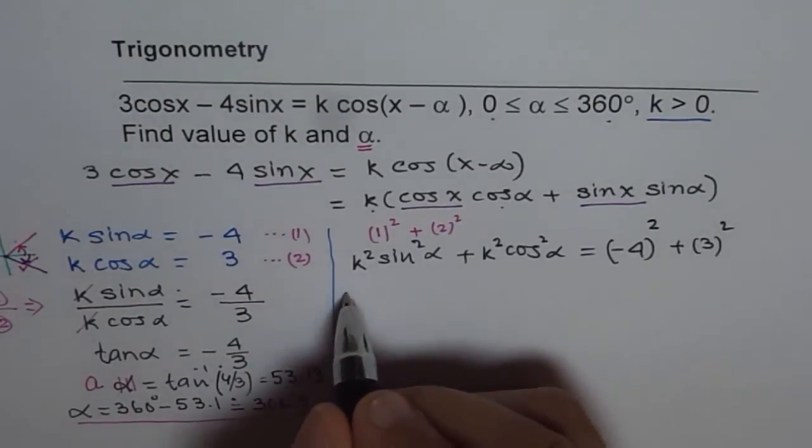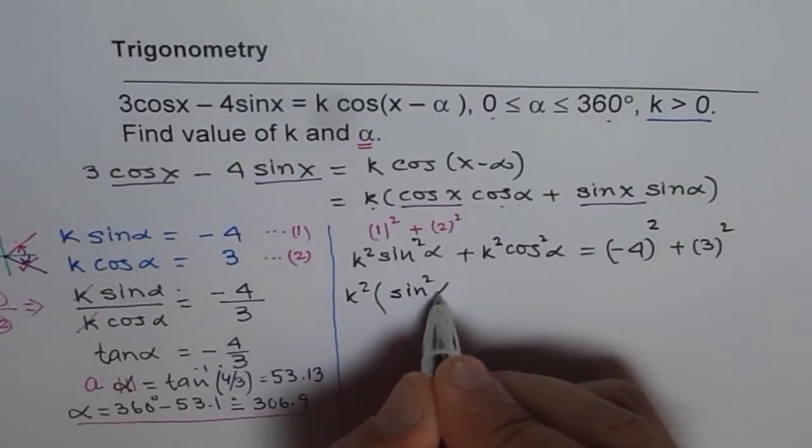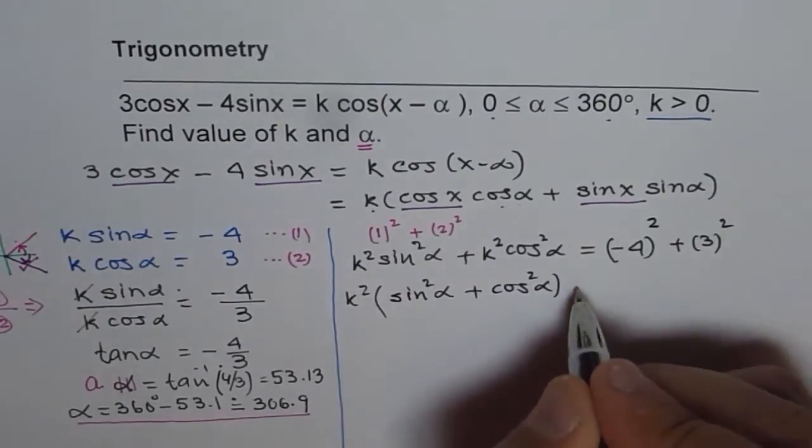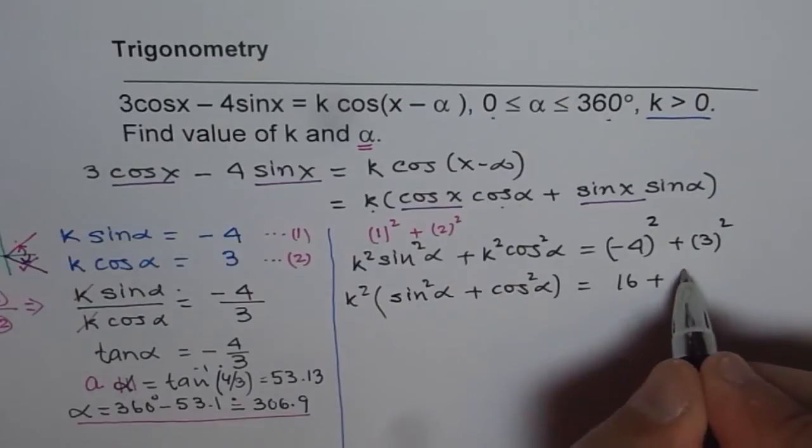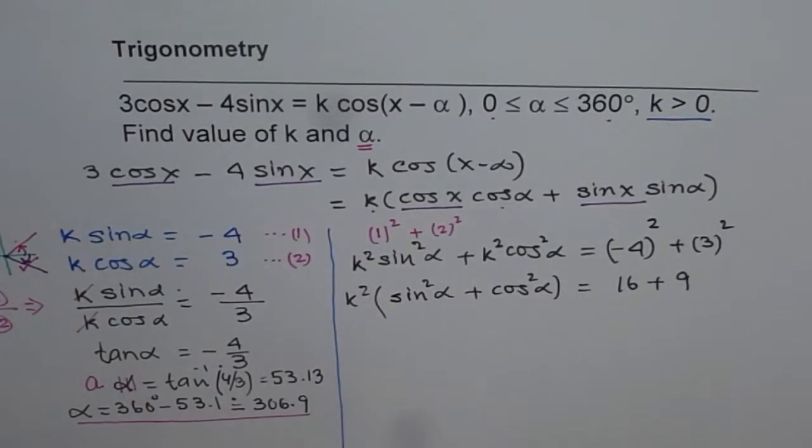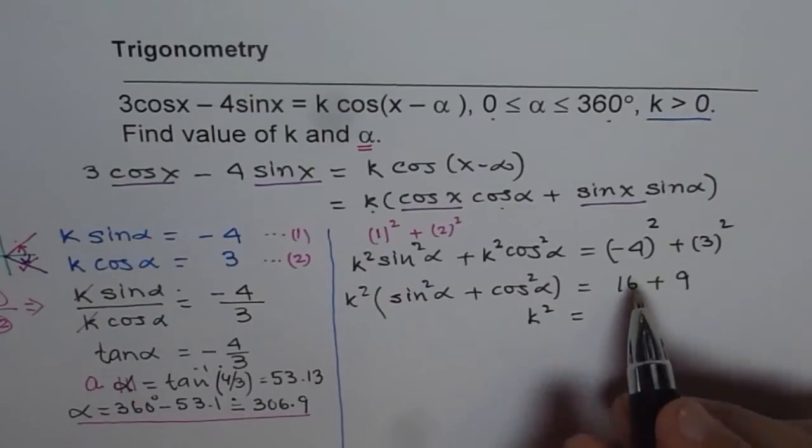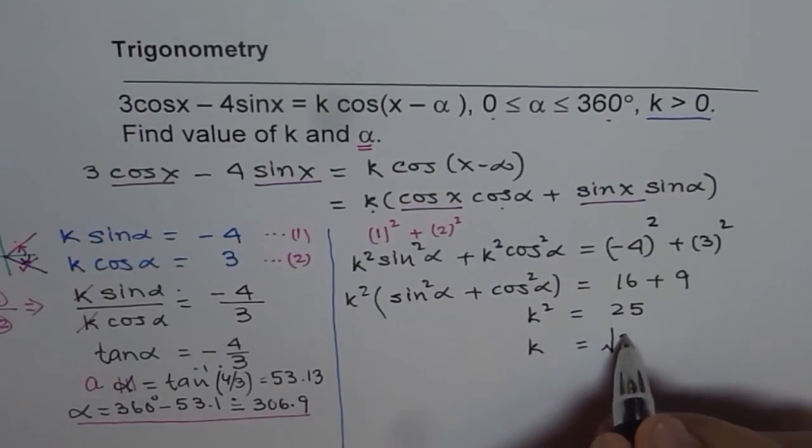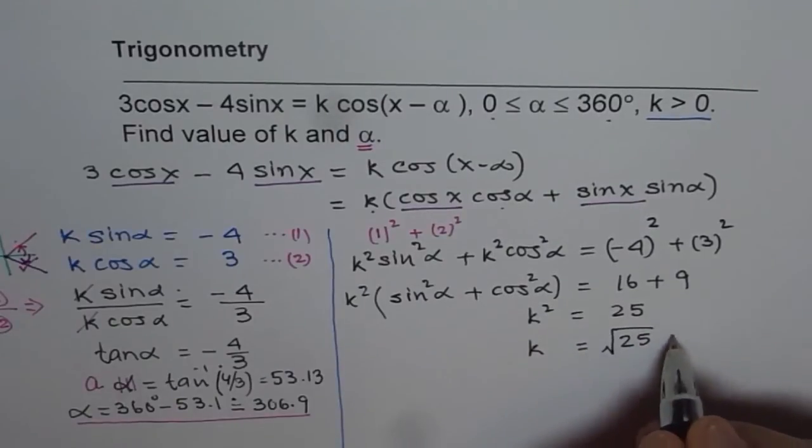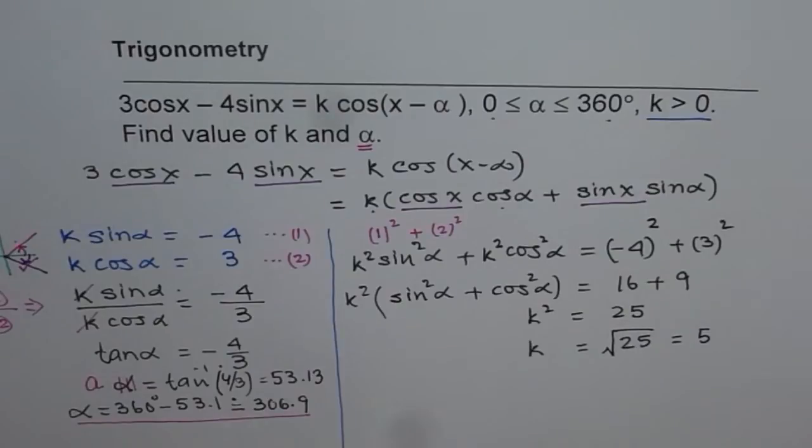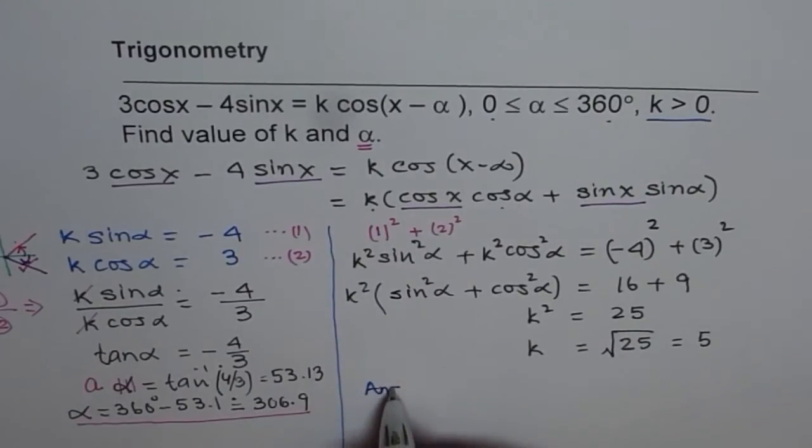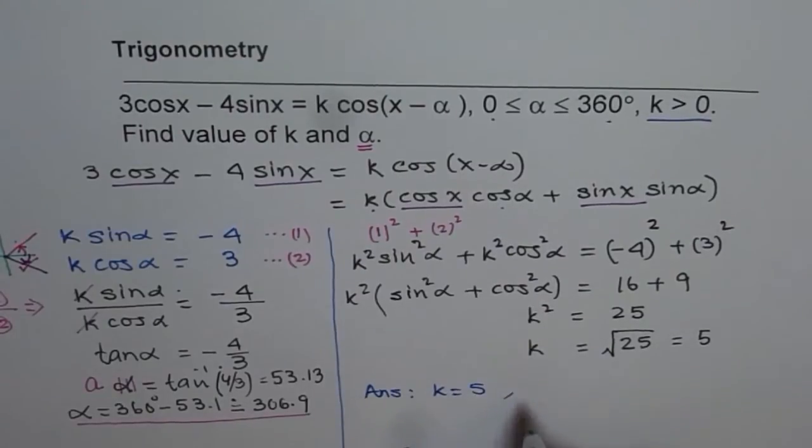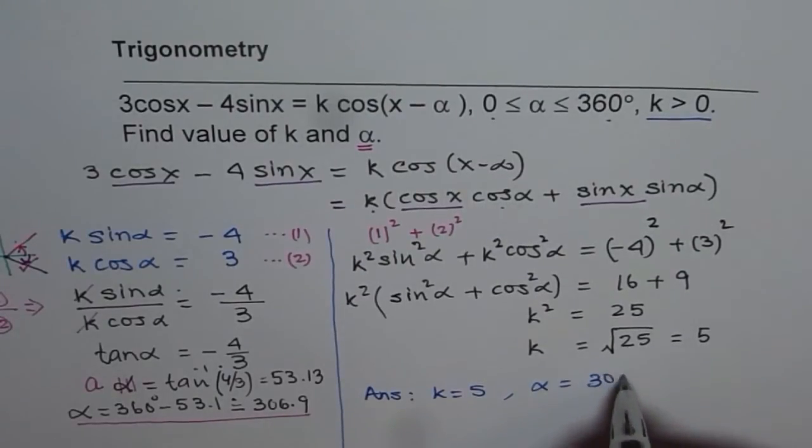So in this case, if I take k square common, I am left with sine square alpha plus cosine square alpha. And here, we get 16 plus 9. Now what is sine square alpha plus cosine square alpha? You got it. It is just 1. So we get k square equals to 16 plus 9, which is 25. And if you square root both sides, then since k is greater than 0, we will take only the positive value. And so we get k equals to 5. So that is the value of k. Now from here, we can write down our answer. So we get k as equals to 5 and alpha as equals to 306.9.